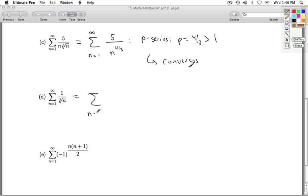Letter D. I can rewrite this as the sum n equals 1 to infinity, 1 over n to the 1 third.